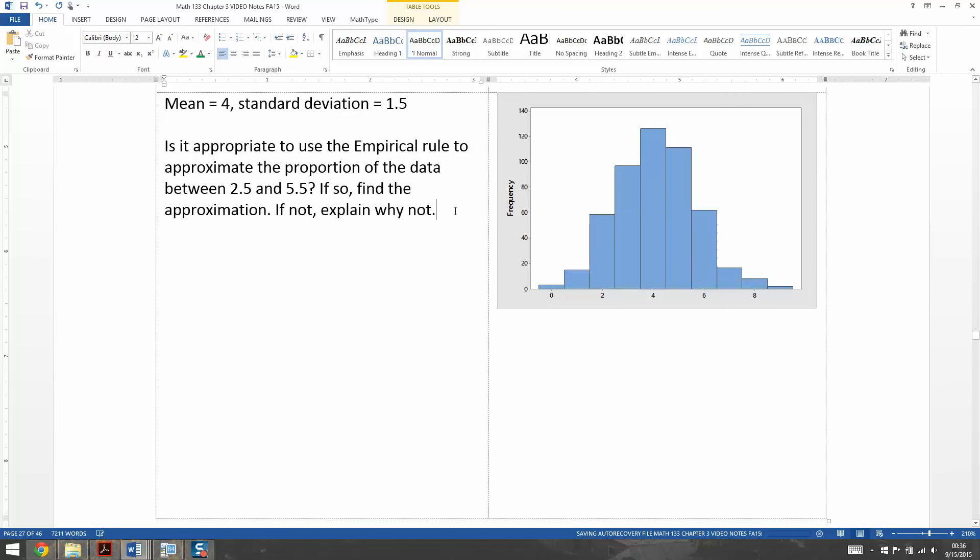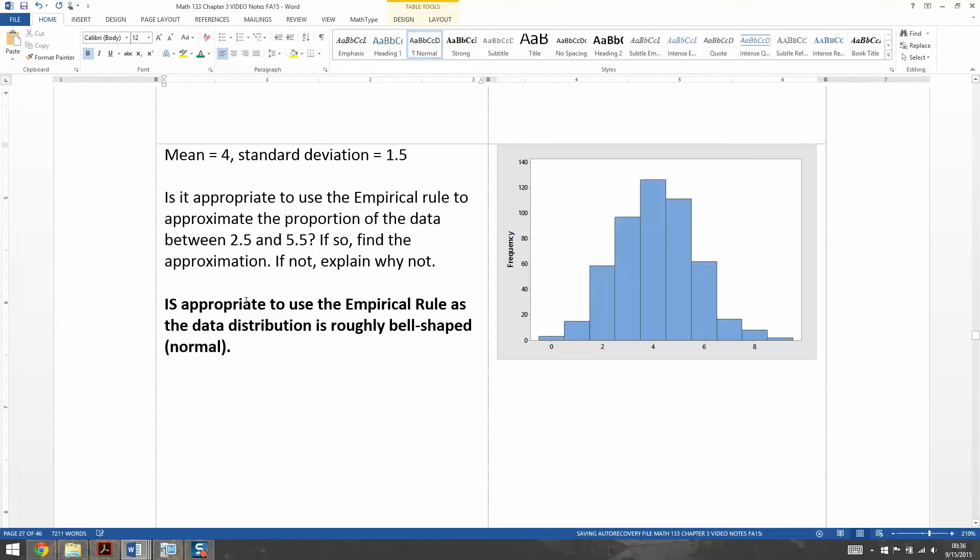No, it's not. This one, the data set roughly is bell-shaped. So it is appropriate. Let me copy and paste that. It is appropriate to use the empirical rule as the data distribution is roughly bell-shaped, i.e. normal.